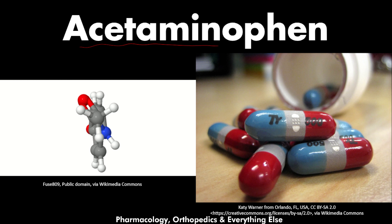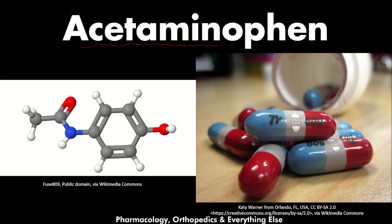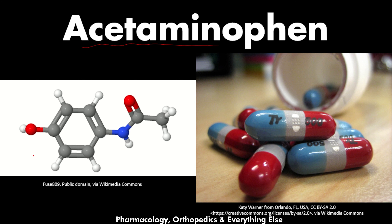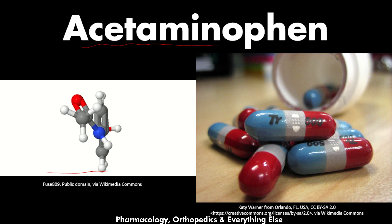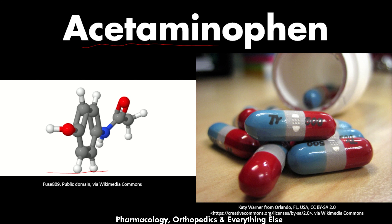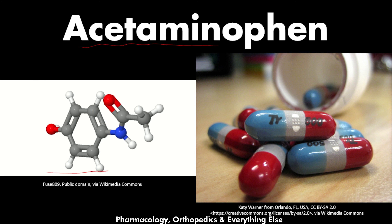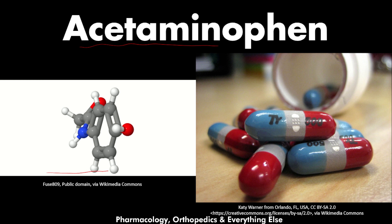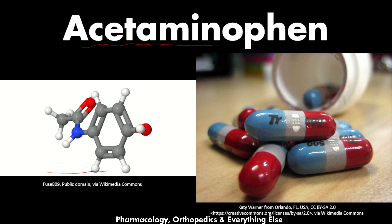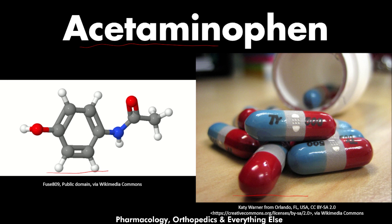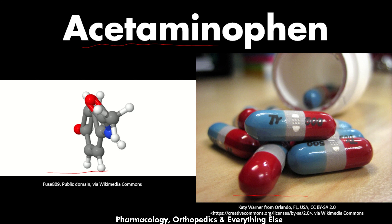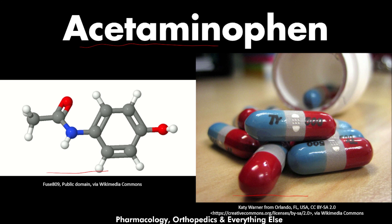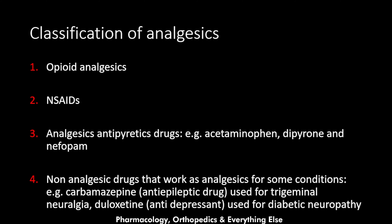You can always skip to other parts of this video using the chapters in the video description. Regarding the pictures on the left, we have the chemical structure of acetaminophen — the black spheres are carbon atoms, white spheres are hydrogen atoms, the blue sphere is the nitrogen atom, and the red spheres are oxygen atoms. On the right we have the pill shape for the famous trade name Tylenol.